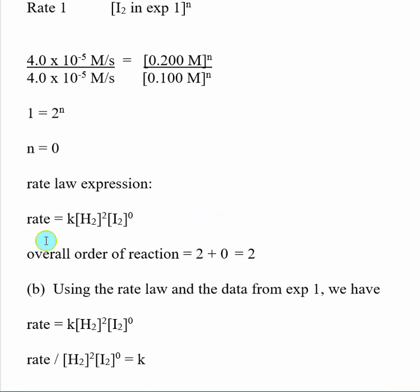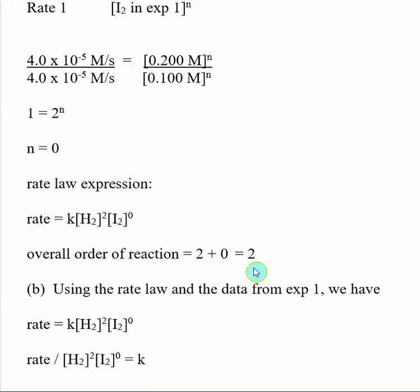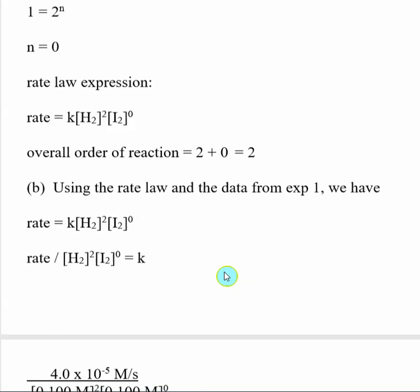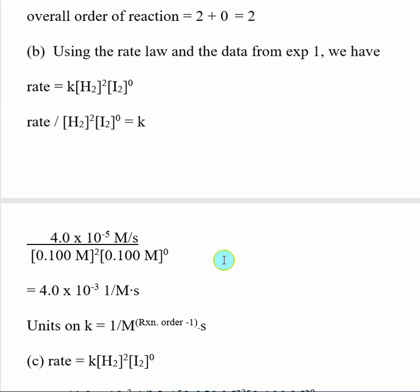So now I have these exponents and can write a better version of the rate law expression. The reaction is second order with respect to hydrogen and zeroth order with respect to iodine. The overall reaction order is the sum of all exponents: two plus zero equals two, so the overall reaction order is second.